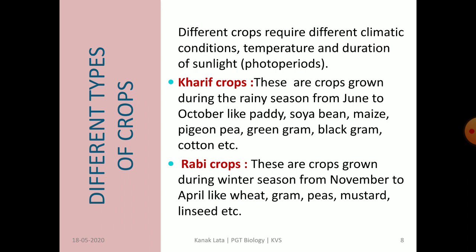Crops can be classified on the basis of requirements of different climatic conditions — temperature and duration of sunlight, that is photoperiods, required by the crop. On this basis, crops are of two types: Kharif and Rabi crops.